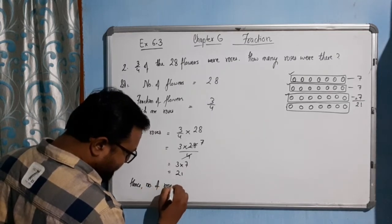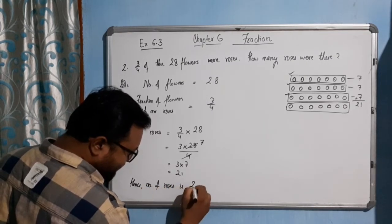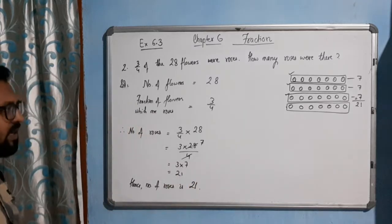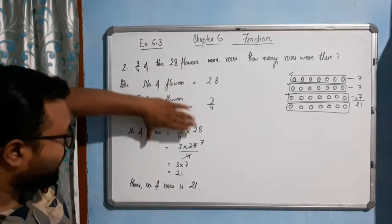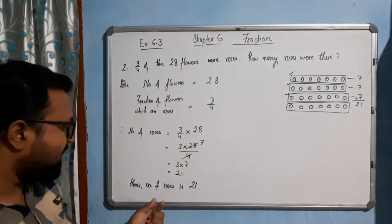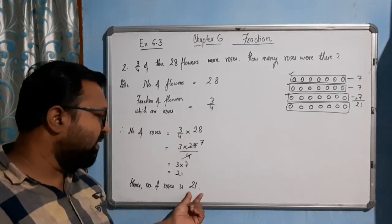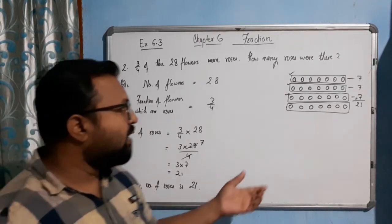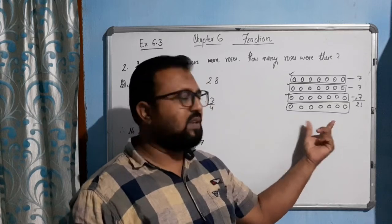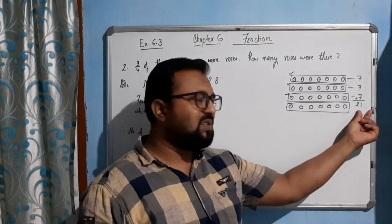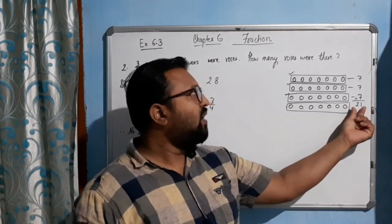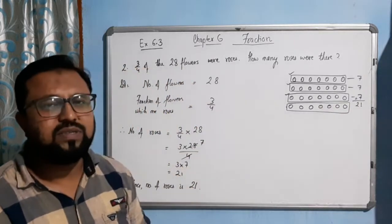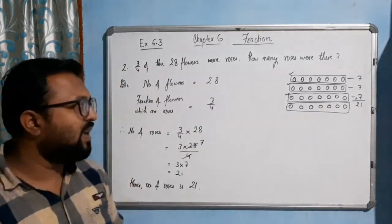Number of roses is 21. See by the calculation also we can see that how many roses are there: 21 roses. And by diagrammatically also you have understood how many roses are there: there are 21 roses. I hope you have understood this maths very clearly.